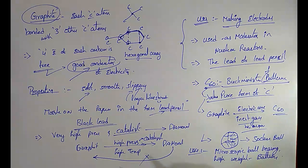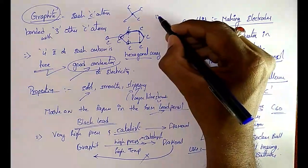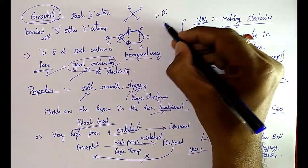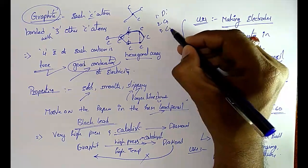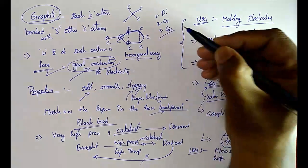These are the allotropes of carbon: first, diamond; second, graphite; and third, C60.